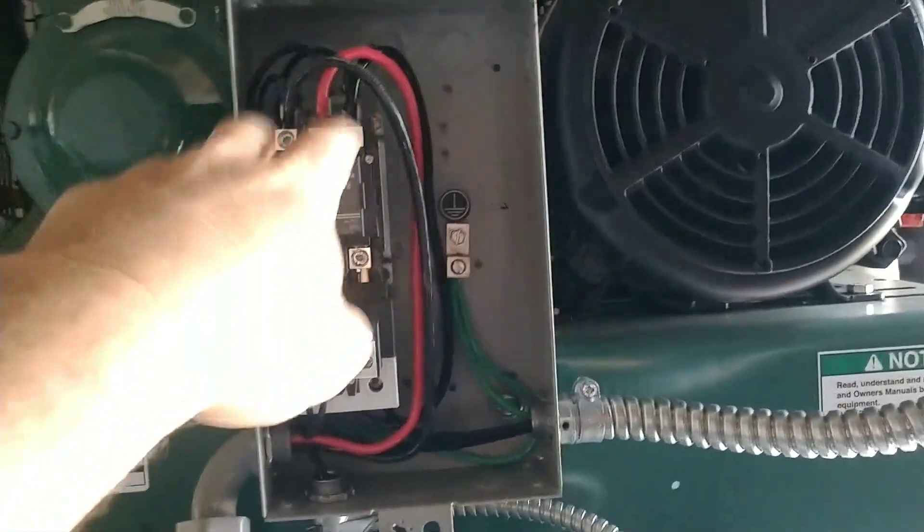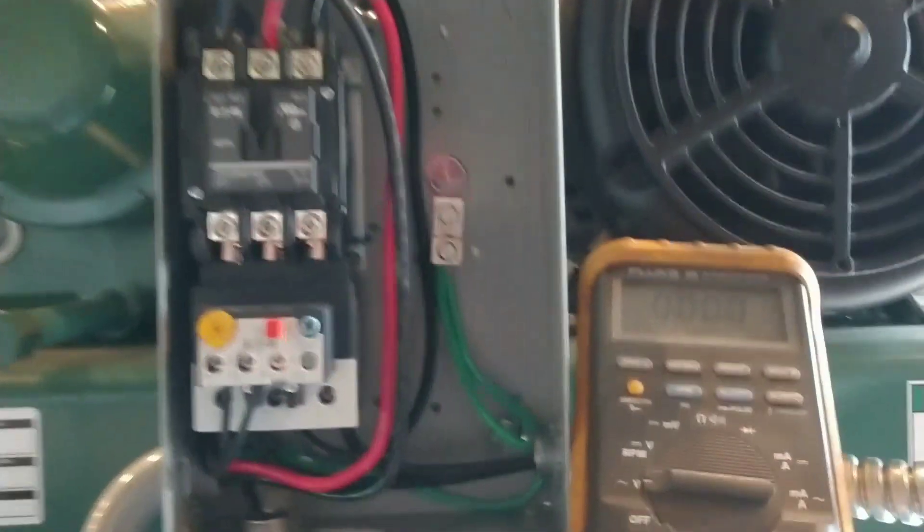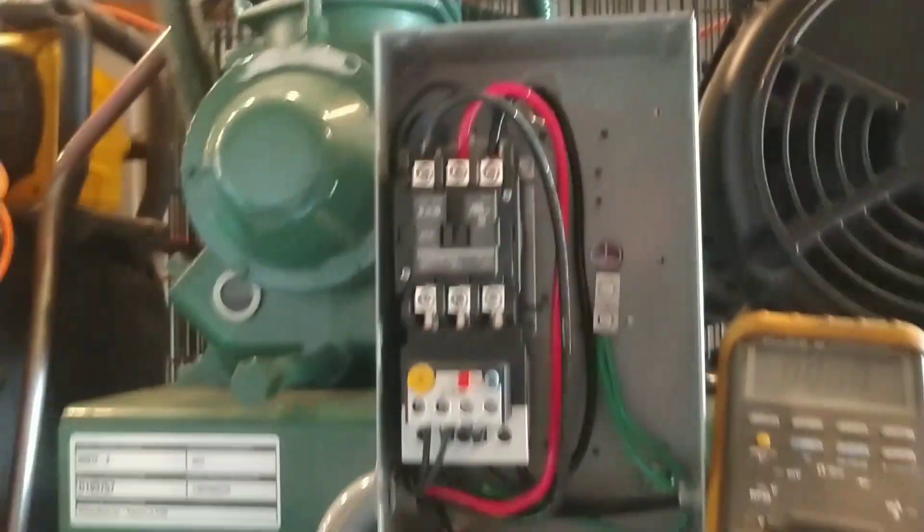First step is going to be cut the breaker off, make sure it's off. Take your tester, come in here where your line comes in, follow it up, make sure you are turned off. Make sure because it could be mislabeled, it could be on the wrong breaker.